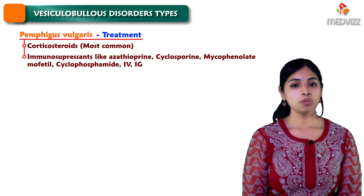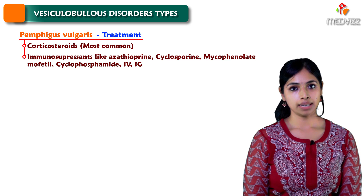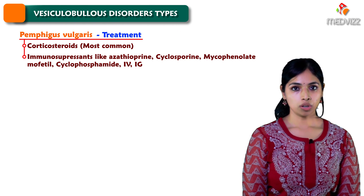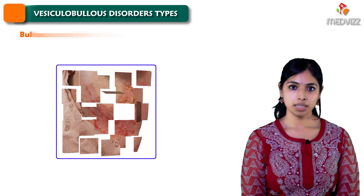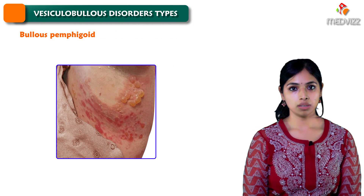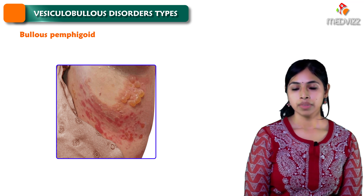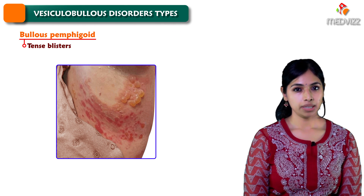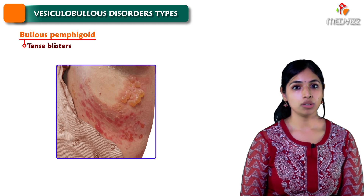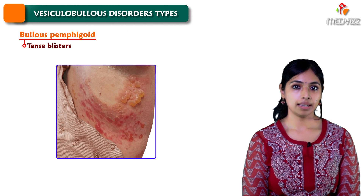So even though the morbidity and mortality rate is quite high in pemphigus vulgaris, it is treatable. The next condition is bullous pemphigoid, another variant of vesiculobullous disorders. In pemphigus vulgaris we see flaccid blisters, whereas in bullous pemphigoid we see tense blisters — meaning the blisters look tight and do not rupture as easily.